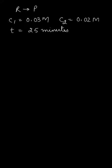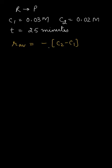Hello students. In this question we are given the reaction R changing into P, and the concentration changes from 0.03 to 0.02 in 25 minutes. We need to find the average rate of reaction. The average rate of reaction is given by the negative of the change in concentration — that is C2 minus C1 — divided by the time taken, written as Delta T.